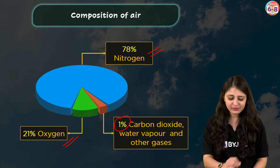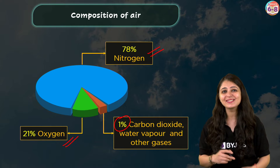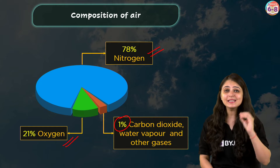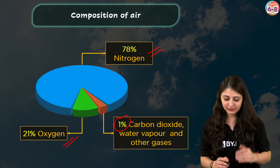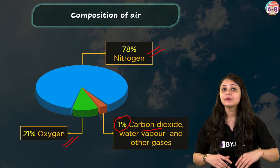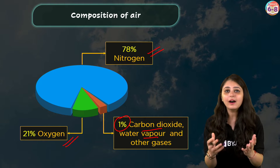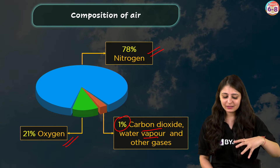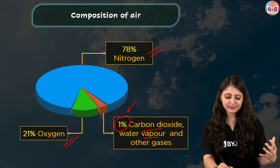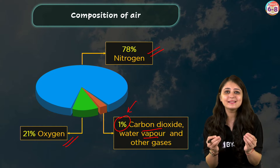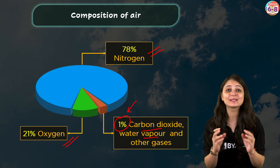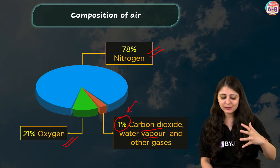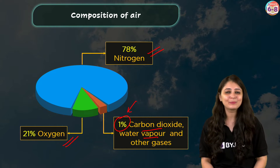In addition to these major components, air also contains trace amounts of other gases like carbon dioxide, water vapor, argon, neon, helium, etc. Now, this remaining 1% — while present in smaller amounts, these gases also have significant roles in the atmosphere. So they may be small in quantity, but they are not less in importance.